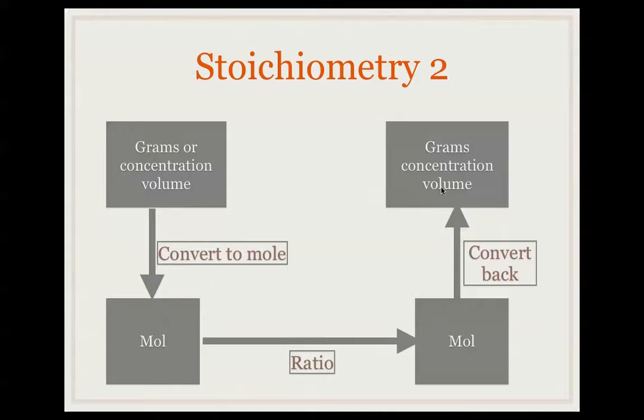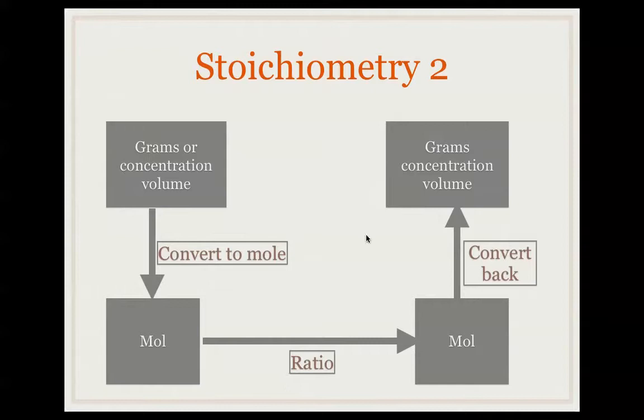Now I'm going to focus on the ratio here, because this is something you haven't done before. I'm going to give you an example. So here's my first little example. What do you mean, ratio? Basically, it's a ratio of number of moles of different things in an equation. For example, we have an unknown, then we have a known here. The example is this one here. I'll just go through what it says. We have hydrochloric acid, magnesium, gives you magnesium chloride, and hydrogen gas.